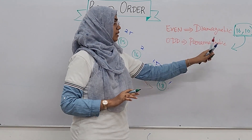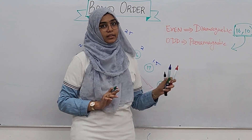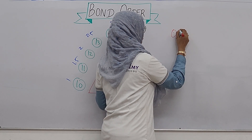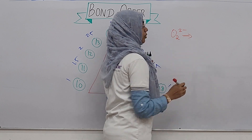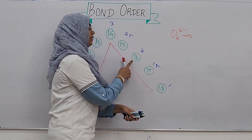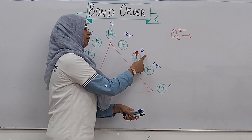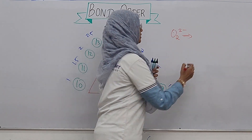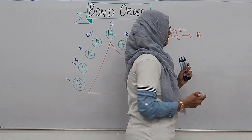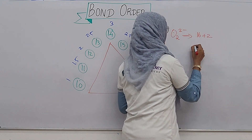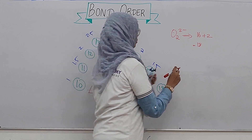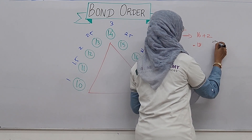For example, O2²⁻: O2 normally has 16 electrons. For O2²⁻, 2 extra electrons are added, so 16 plus 2 equals 18. In the triangle, 18 gives a bond order of 1. So O2²⁻ has a bond order of 1.